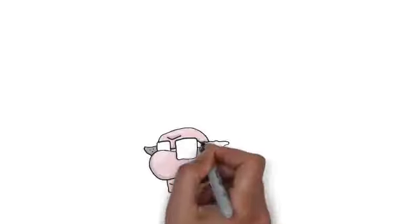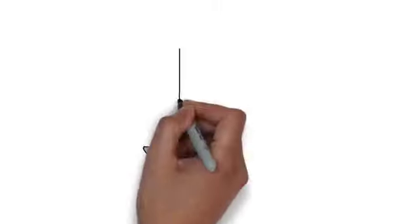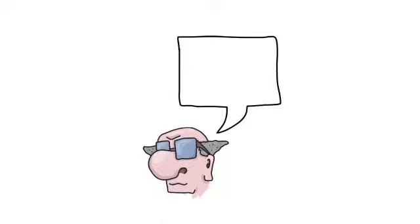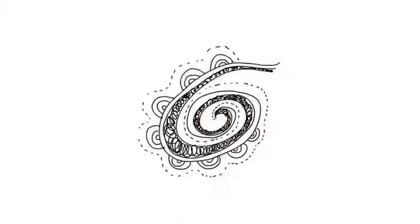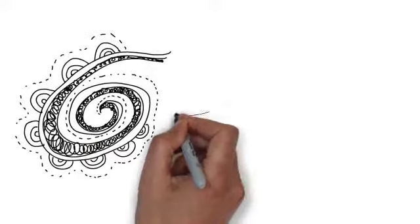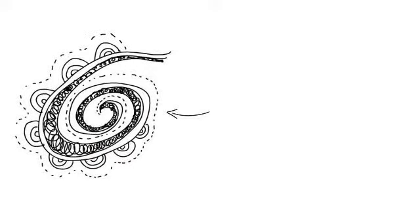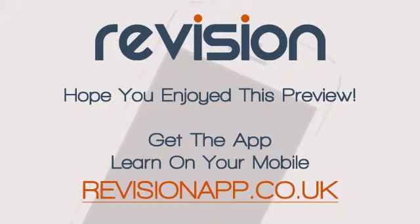The formula for this is force equals mass times gravity, or F equals mg. A gravitational field is any area that gravity can work upon. There are two types. One is a radial field. For example...